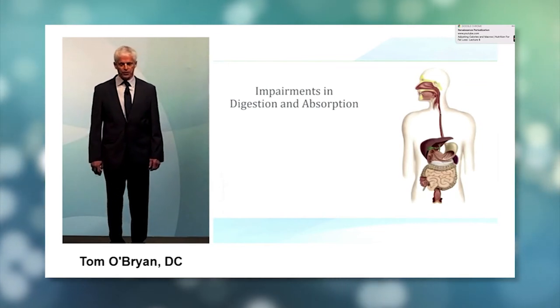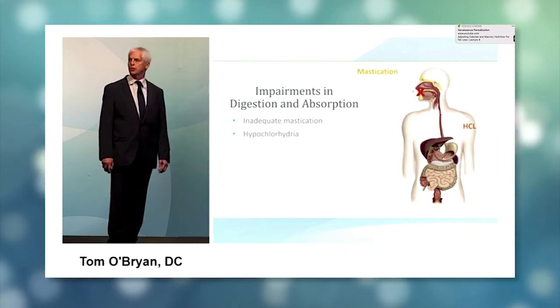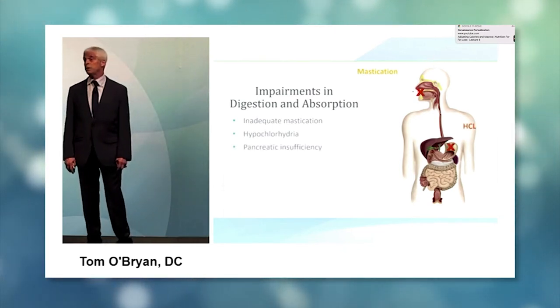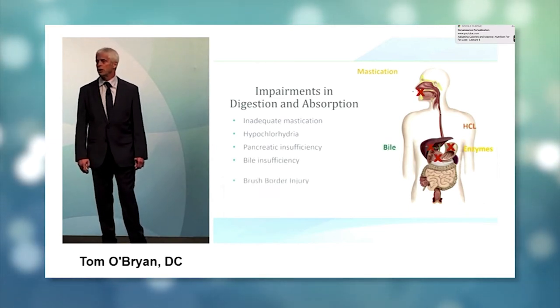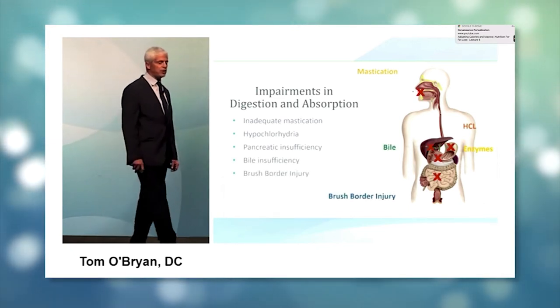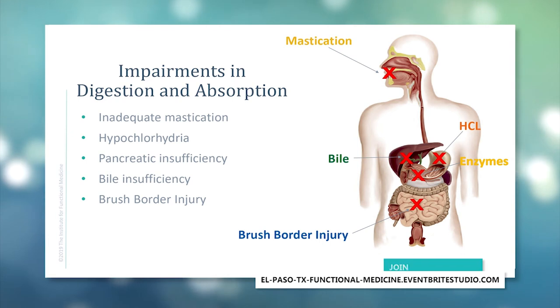Impairments in digestion and absorption can occur because of inadequate mastication. Almost all of us don't chew enough. It can make a huge difference in their function when you have adequate mastication. Hypochlorhydria, pancreatic bile insufficiencies, brush border injuries.